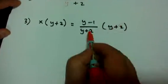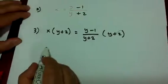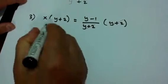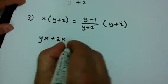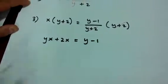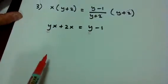We now simplify. On this side, we will expand it. So it will be yx plus 2x equal. Now this simplifies to y minus 1. Now remember what we are doing. We are solving for y, this y here.